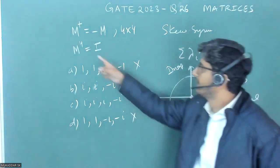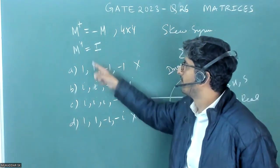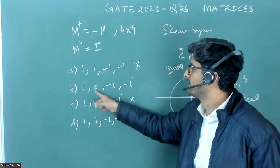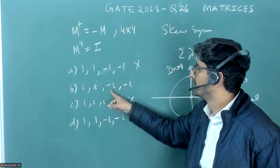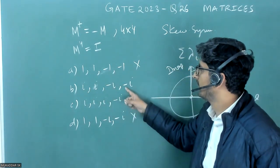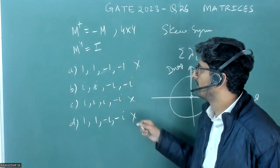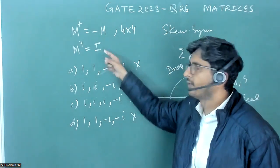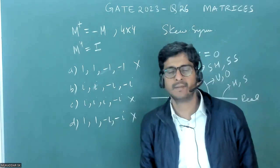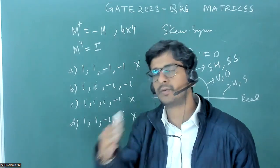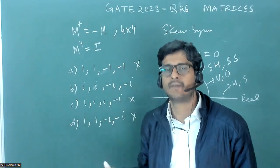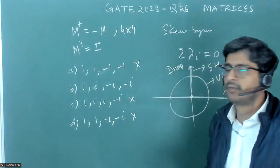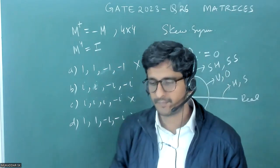We can also verify using M⁴ = I. Each eigenvalue raised to the power 4 must equal 1. The trace of M⁴ equals the sum of eigenvalues each raised to the power 4, giving 1+1+1+1 = 4, which equals the trace of the 4×4 identity matrix. This confirms the correct answer.